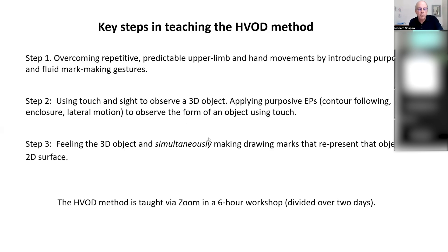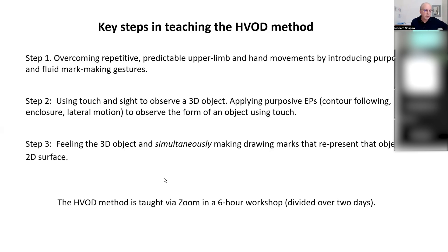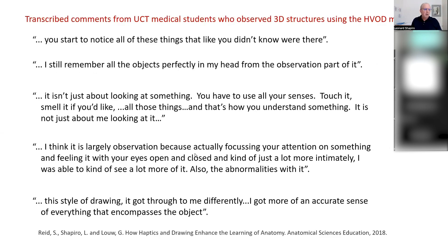The next step is we use touch and sight together to observe an object. We apply purposive exploratory procedures to observe the form of the object, gathering that information into the sensory cortex. Then, while feeling the object, we simultaneously make drawing marks that represent the object.